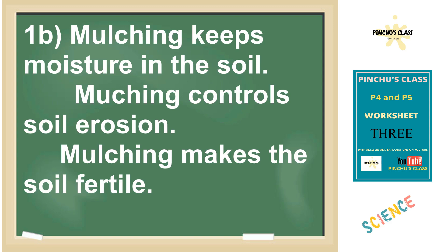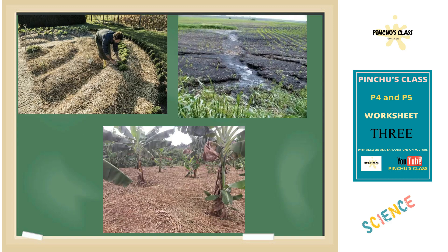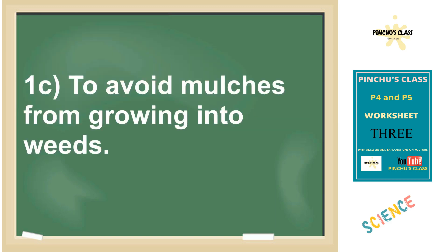Number one B, advantages of mulching: mulching keeps water or moisture in the soil, it also controls soil erosion, and it also makes the soil fertile because the dry plant materials decompose and form manure.